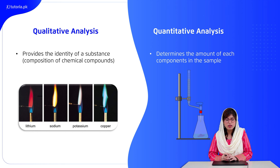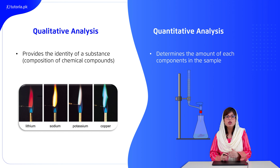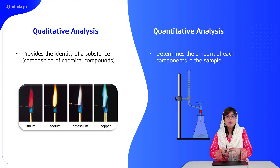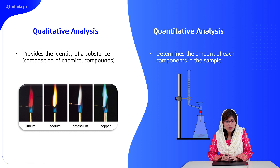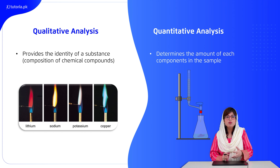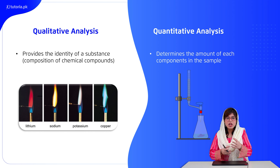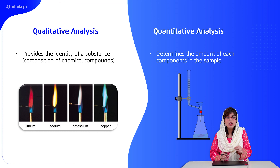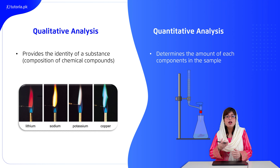Now let's move to the second type — quantitative analysis. There can be some confusion, but the ambiguity will be cleared when I define it. Quantitative analysis tells you how much quantity of an element is present in your organic or chemical compound. It determines the amount of each component present in a sample. For example, in titration analysis, you find out how much amount of solute is present per decimeter cube of solution. Through a neutralization reaction, you determine the quantity — how much acid or base was present in your sample. So this is a brief comparison between qualitative and quantitative analysis.